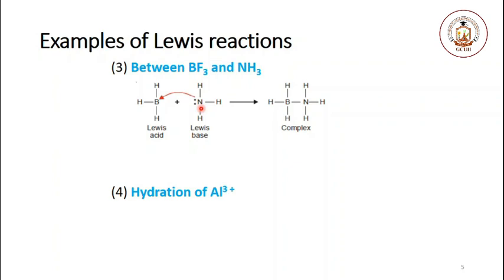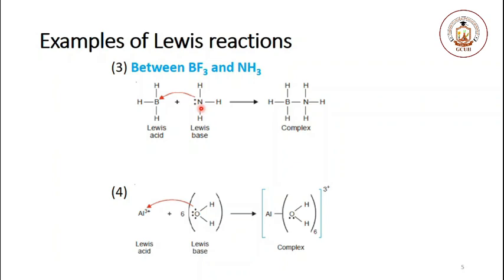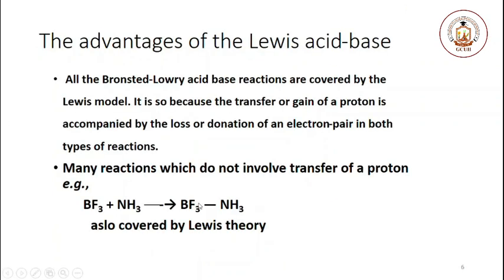Hydration of a metal ion such as aluminum is also a Lewis reaction. In this reaction, the aluminum or metal ion acts as a Lewis acid — it can accept an electron pair from a Lewis base — and they form a complex.